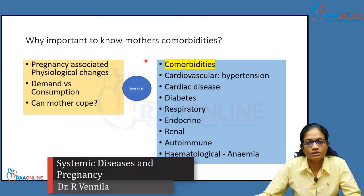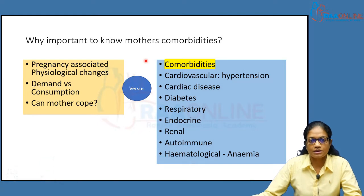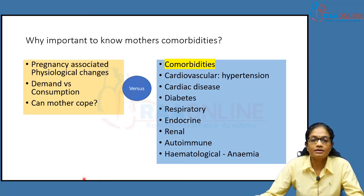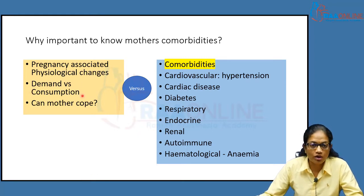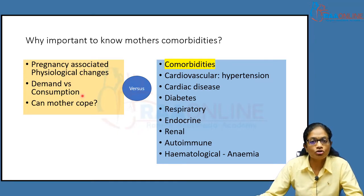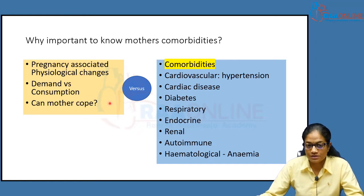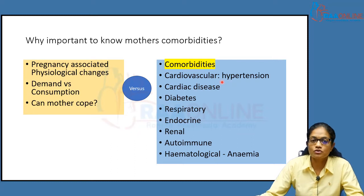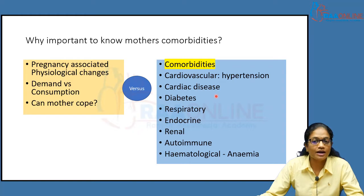Why is it important to know about the mother's comorbidities? Pregnancy has a lot of physiological changes in order to cope with the increasing demands — there's a demand versus consumption of oxygen and other requirements happening. The question is whether the mother can actually cope. The most common and most dreaded comorbidity, reported as the commonest cause of maternal morbidity and mortality, is hypertensive diseases.